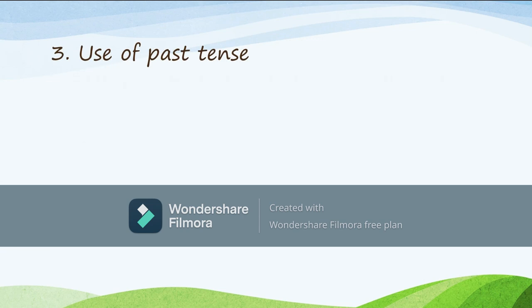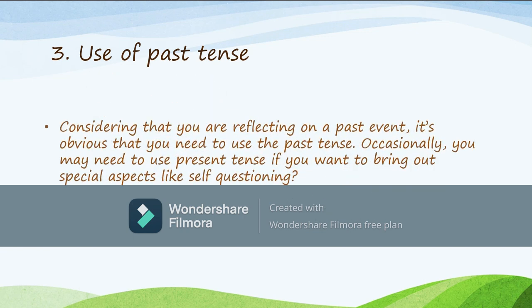Feature number three: the use of past tense. Considering that you are reflecting on a past event, it's obvious that you need to use past tense. Occasionally you may need to use present tense to bring out special aspects like self-questioning, but remember that a journal is mostly and mainly in the past tense. Only use present tense when you need to create a particular effect, but generally maximize on the use of past tense.